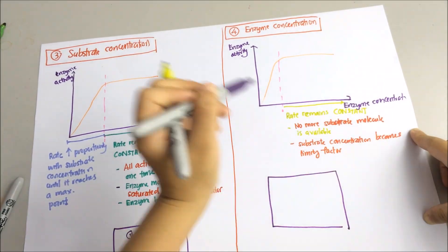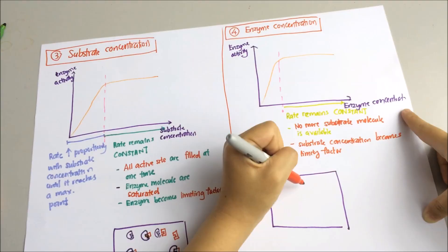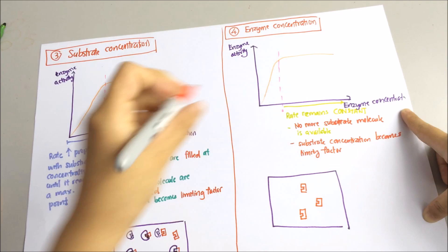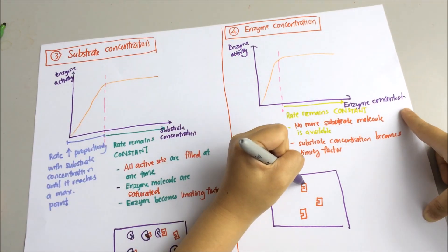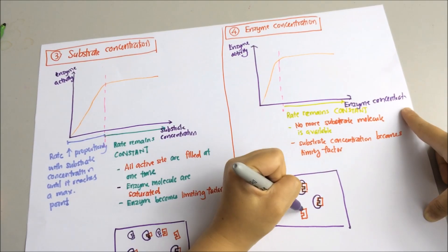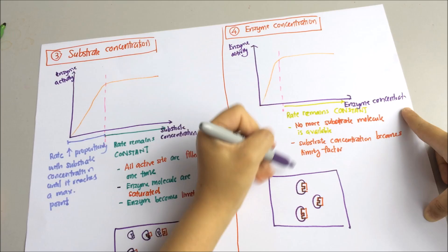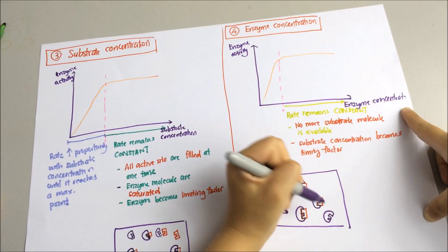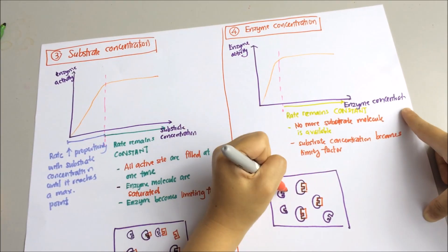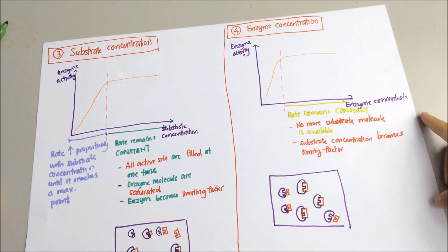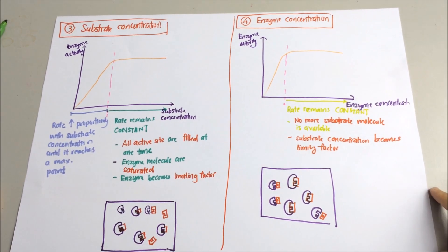If you only have 3 substrate molecules in the solution, you can only form a maximum of 3 enzyme-substrate complexes. There is no point adding more enzyme molecules. At this stage, the only way to increase the rate is to add more substrate molecules. That concludes the presentation.